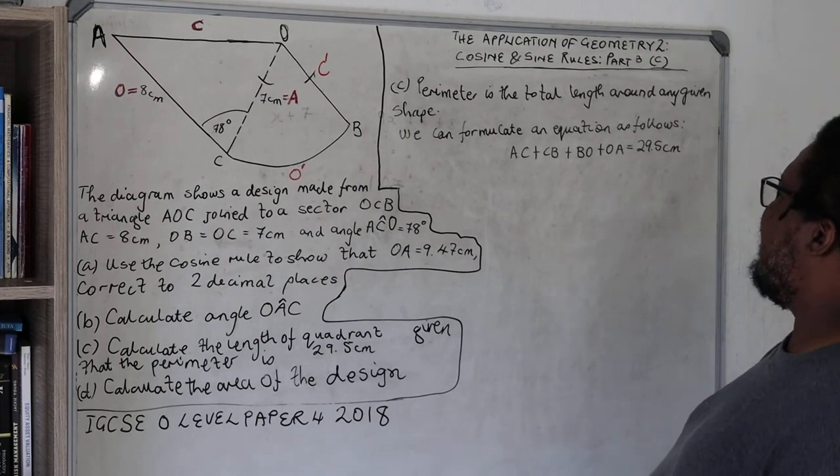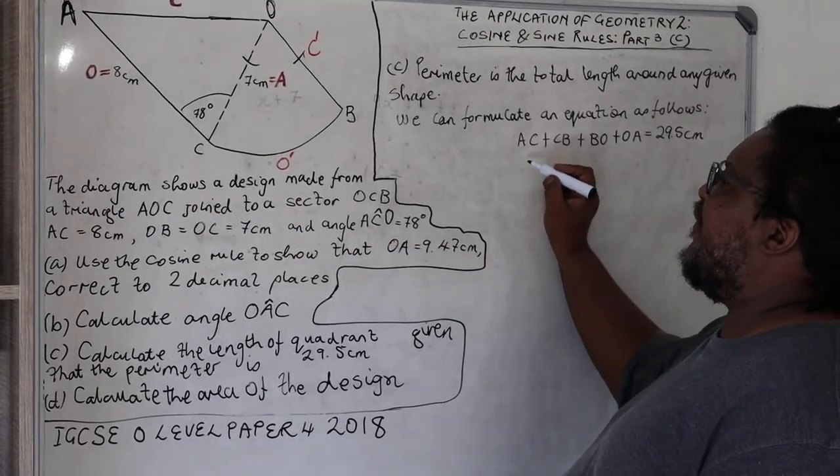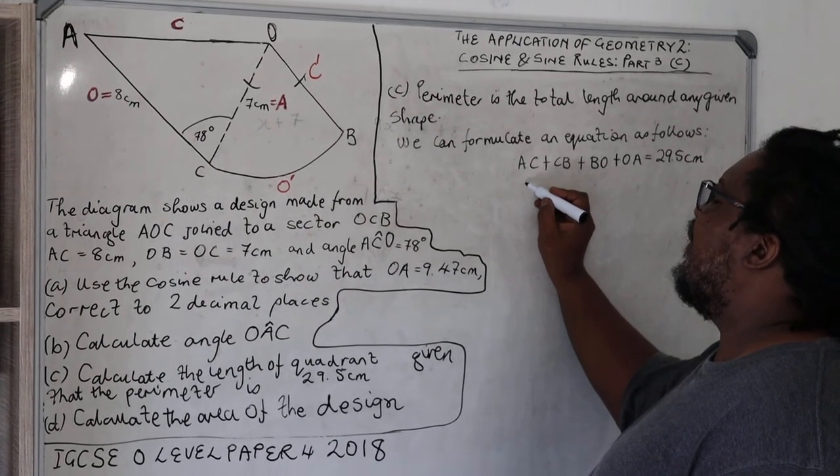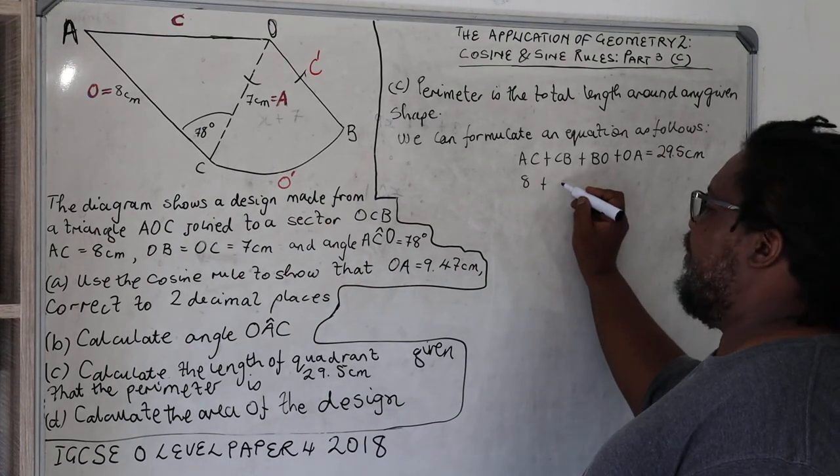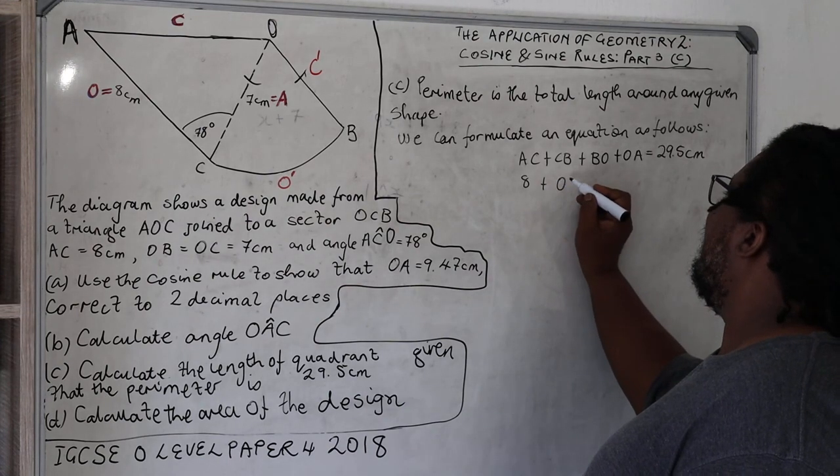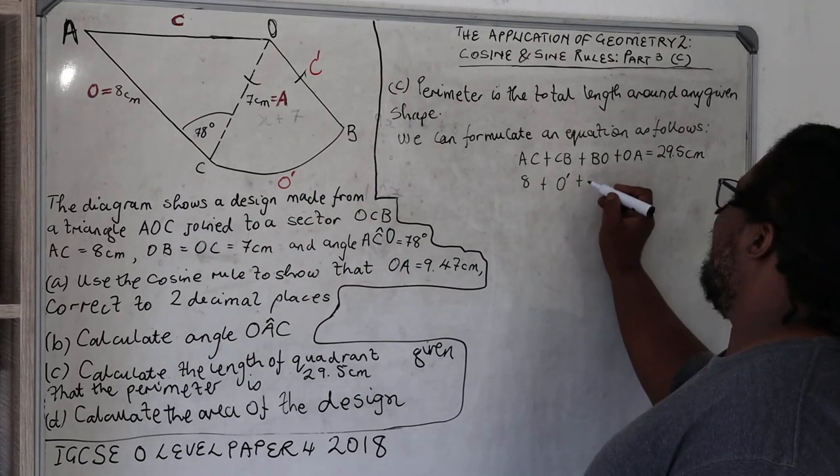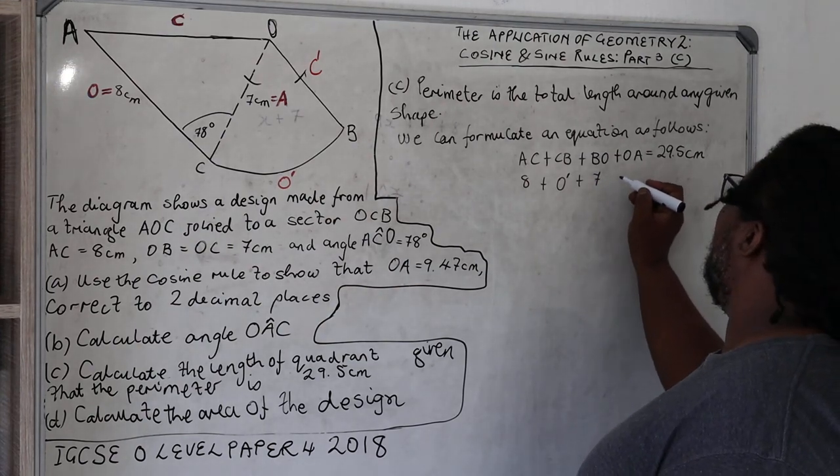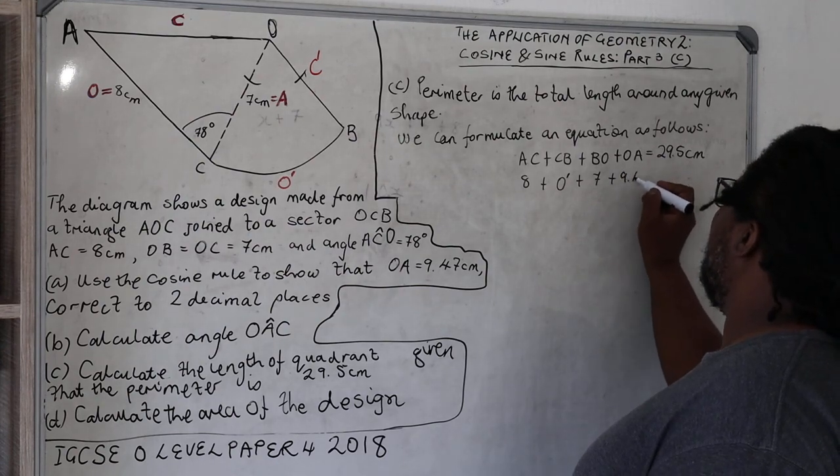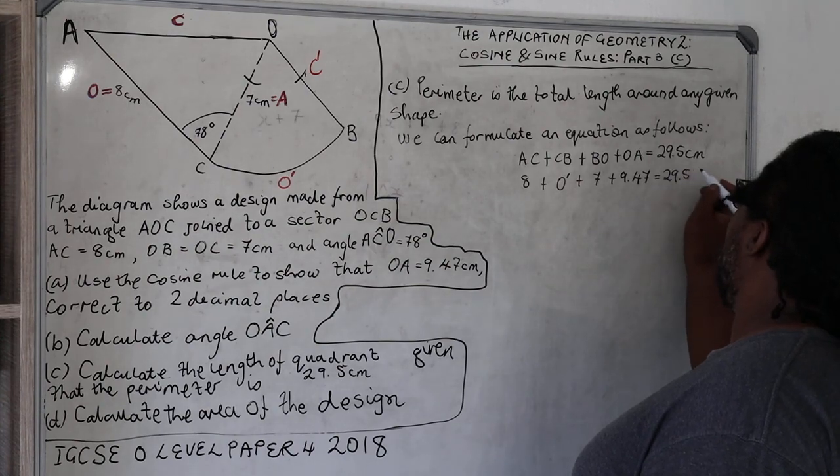If we substitute the length of these sides, we will have 8 plus CB is what we are supposed to find, plus BO is equal to 7, plus OA which is equal to 9.47, is equal to 29.5 centimeters.